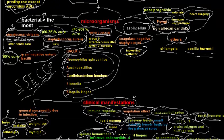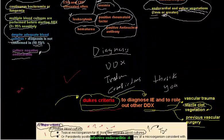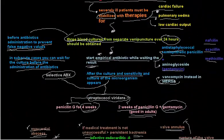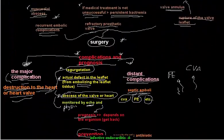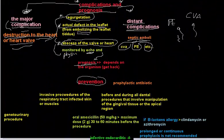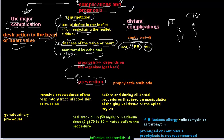In contrast, fungal infections are associated with poor overall prognosis. To summarize prognosis: Streptococcus viridans 90%, Staphylococcus aureus 60–75%, Enterococcus 75–90% — all good. Fungal infections carry a poor prognosis.